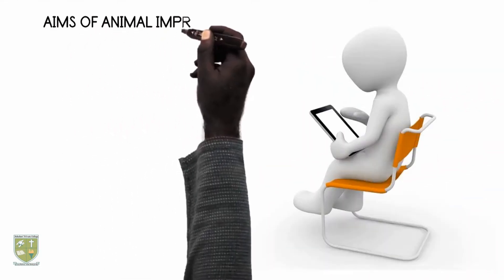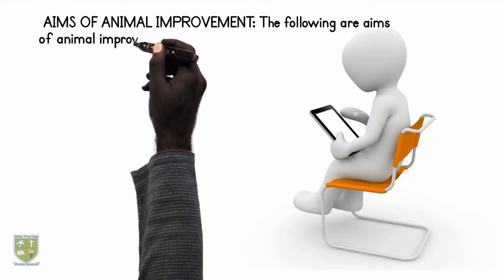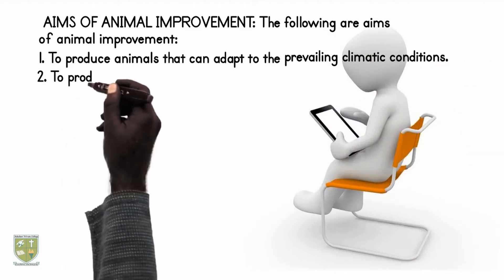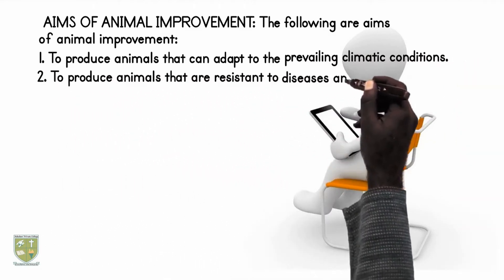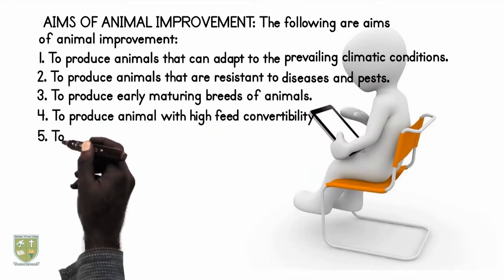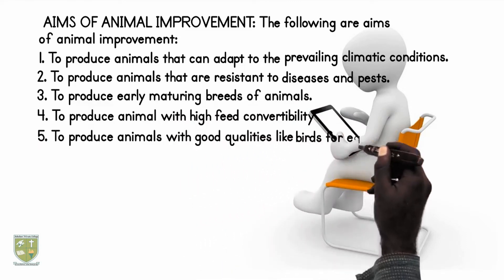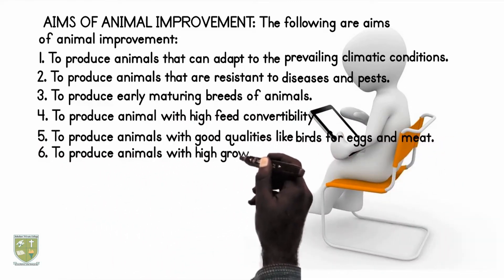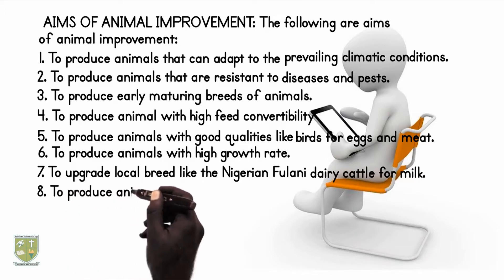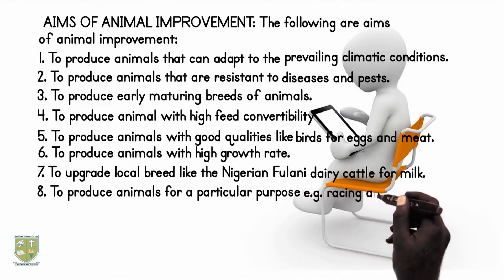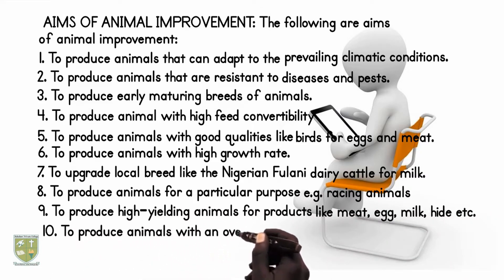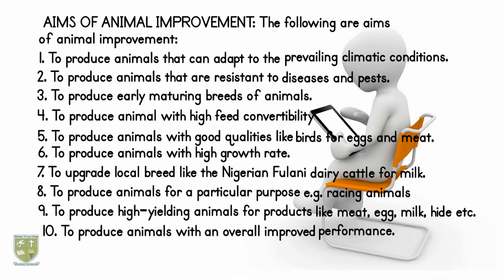Aims of Animal Improvement. The following are aims of animal improvement: 1. To produce animals that can adapt to the prevailing climatic conditions, especially for exotic breeds. 2. Animal Improvement is targeted at producing animals that are resistant to diseases and pests. 3. It is targeted at producing early maturing breeds of animals. 4. It is targeted at producing animals with high feed convertibility. 5. It is targeted at producing animals with good qualities like birds for eggs and meat. 6. It is targeted at producing animals with high growth rate.